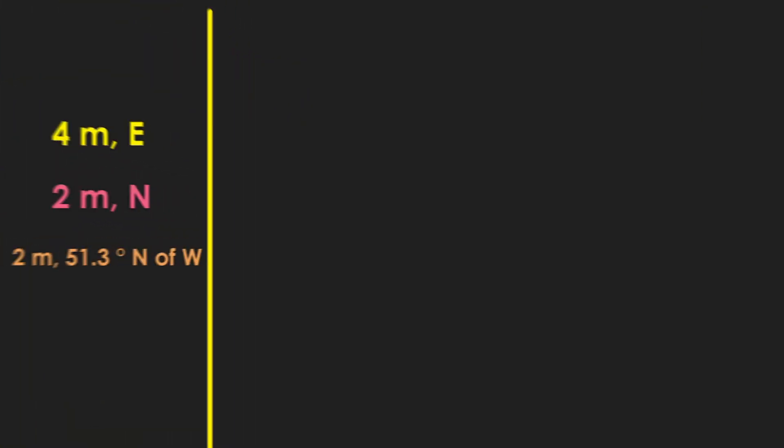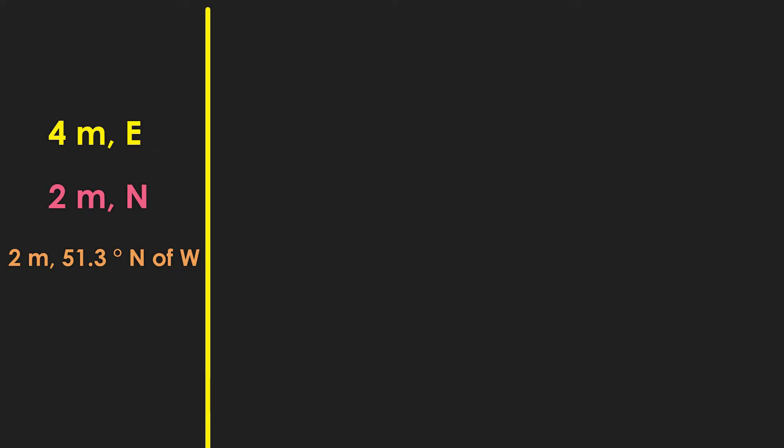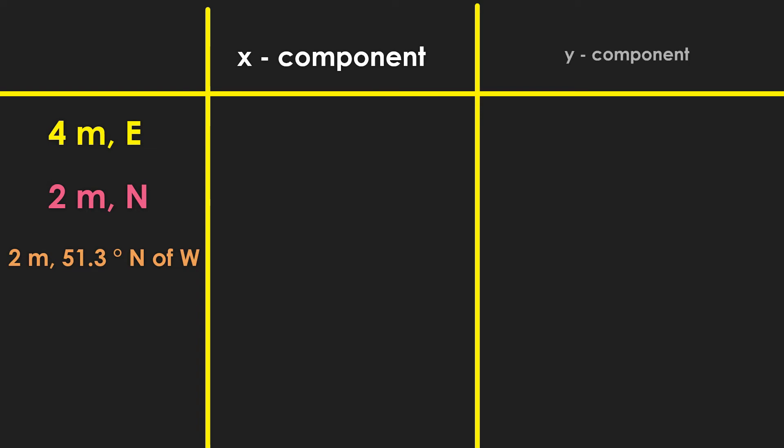Let's add three vectors. 4 meters east, 2 meters north, and now having more vectors needs us to organize our data into tables. Since our third vector has both x and y component, we would need a different approach. First, we will look for the x and y components of all the vectors.